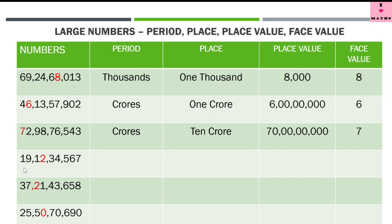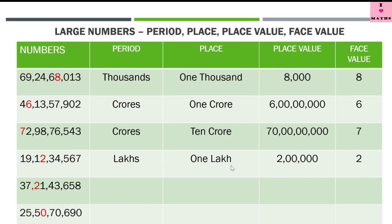Let us read this number: 19 crore 12 lakh 34 thousand 567. We have to find all these values for the digit 2. So 2 is in the lakh's period. The place is 1 lakh. Since 2 is standing at 1 lakh's place, the place value is 2 lakh, and the face value is 2 itself. So lakh is the period, place is 1 lakh, place value is 2 lakh, and face value is 2.